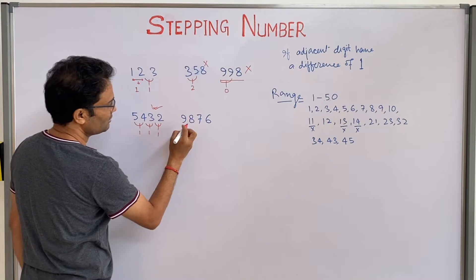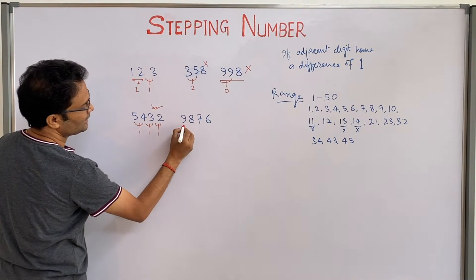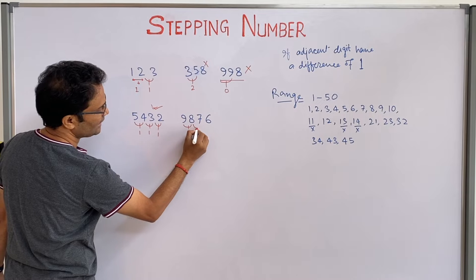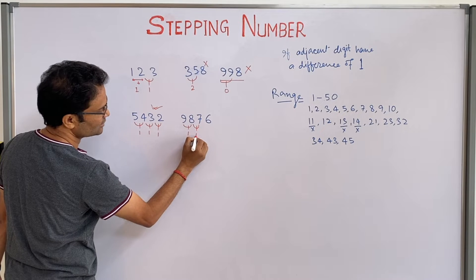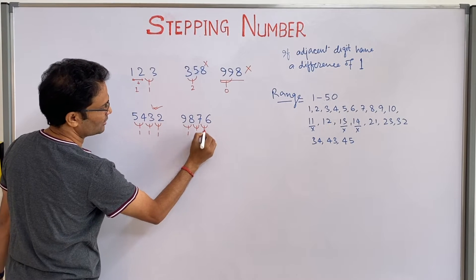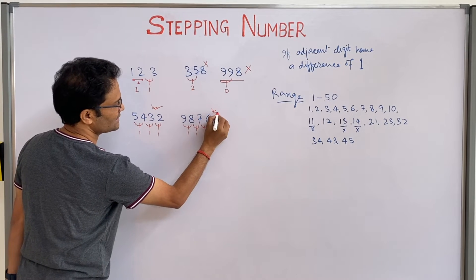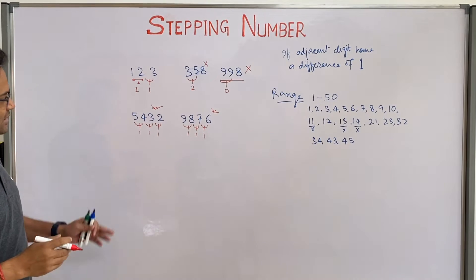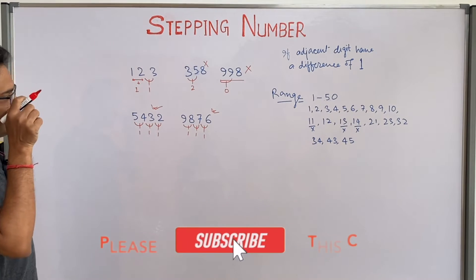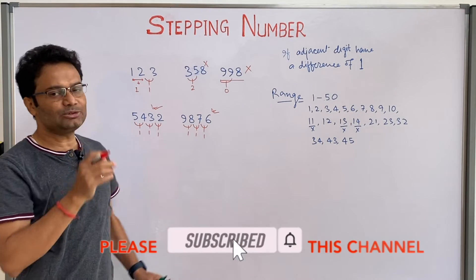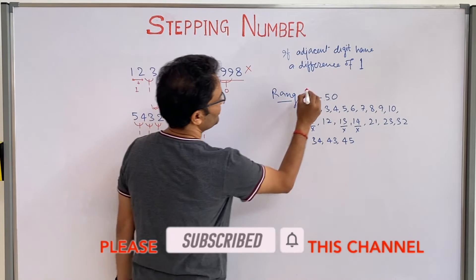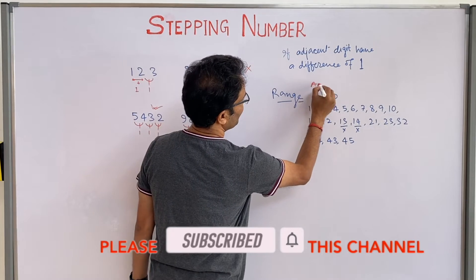Check 987: 9 and 8 difference is 1, 8 and 7 is 1, 7 and 6 is 1 — so 987 is a stepping number. The question is to generate all stepping numbers between a given A and B.